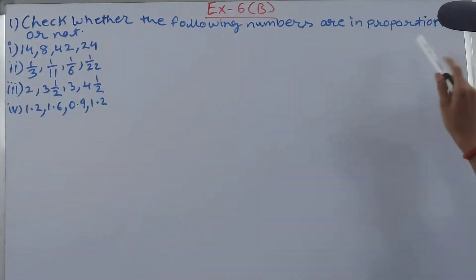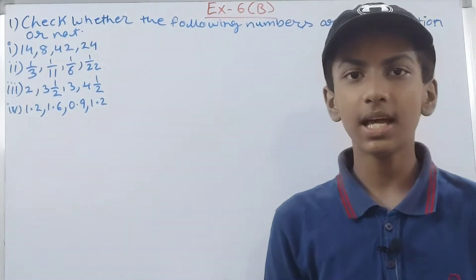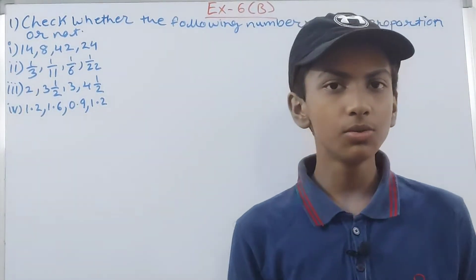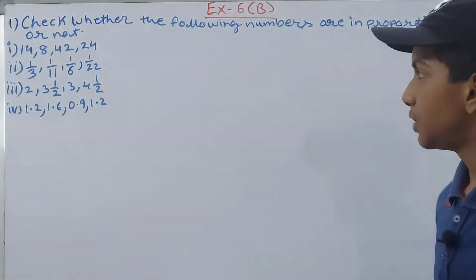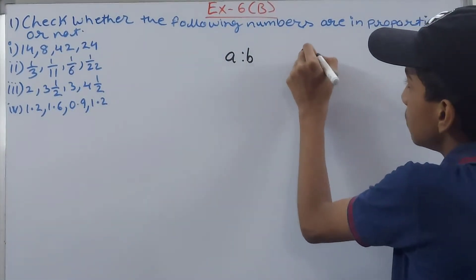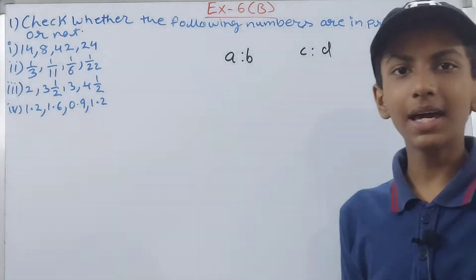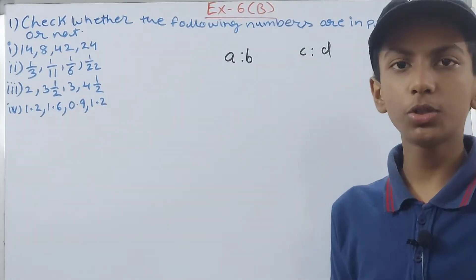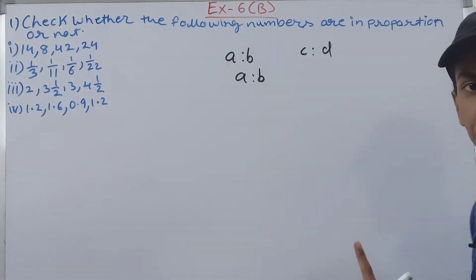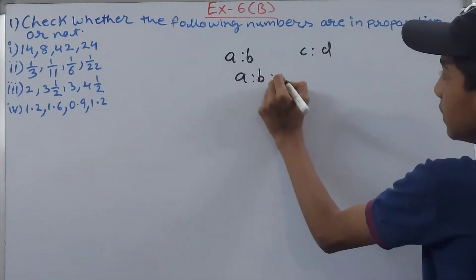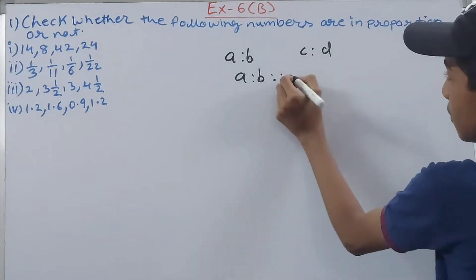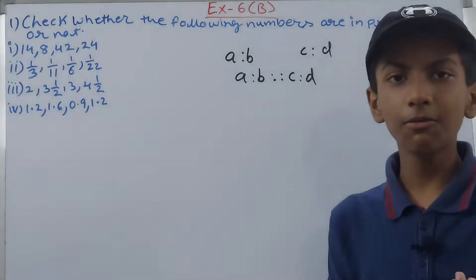What is proportion? Proportion is an equation which states that two ratios are equal. Now, how can we justify this? Suppose I take two ratios A is to B and C is to D. To tell you whether these are in proportion or not, we first write them in a proportion statement: A is to B, then we draw four dots — the proportion sign — and then the second ratio C is to D.